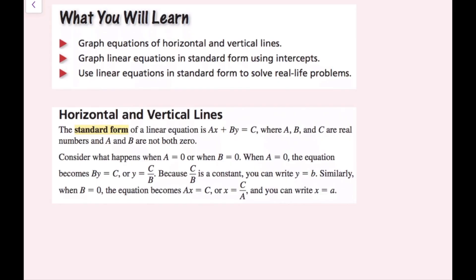We're going to talk about horizontal and vertical lines right now. The standard form of a linear equation is ax plus by equals c, where a, b, and c are real numbers, and a and b are not both zero. One of them can be zero, but not both of them.